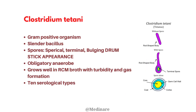Clostridium tetani is a gram-positive organism and a slender bacillus. It has spores which are the infective part of the bacteria. The spore form is spherical, present in the terminal area, and bulging, which gives a characteristic appearance of a drumstick pattern. It is an obligate anaerobe, meaning it cannot live in the presence of oxygen, and it grows well in Robertson cooked meat broth medium with turbidity and gas formation. It has 10 serological types based on agglutination.